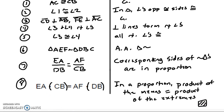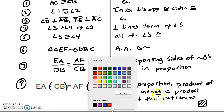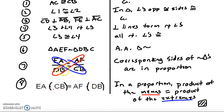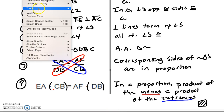Just so you know what I'm talking about — when dealing with proportions, we have some names for these different pieces. The means are what we call these two pieces on the inside. These are called the means. And the extremes are what we call these other pieces — these are the extremes. So the means are the bottom-left and top-right; the extremes are the top-left and bottom-right. That's just a little bit of terminology, and that's how we name it when doing a proof: the product of the means is equal to the product of the extremes.